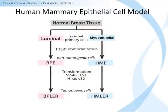To study the functional significance of the E17K mutation in human mammary epithelial cells, we used a genetically matched cell line model derived from both non-tumorigenic and transformed myoepithelial-like and luminal-like precursors. The non-tumorigenic cells are referred to as HME and BPE cells, and the transformed derivatives are referred to as HMLER and BPLER cells.